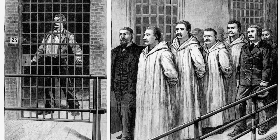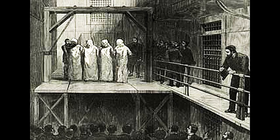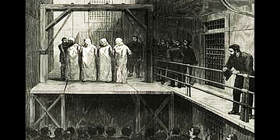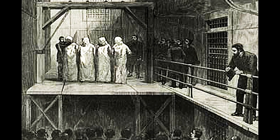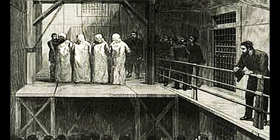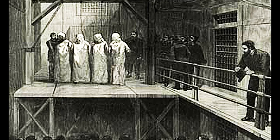Of the seven sentenced to death, two repudiated their beliefs and had their sentences commuted to life in prison. The remaining five refused to do that and were left to die. One committed suicide the night before his planned execution, and the last four were hanged.